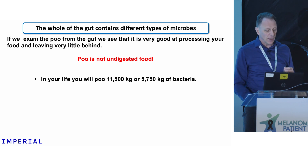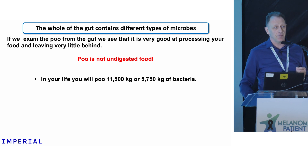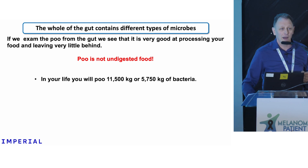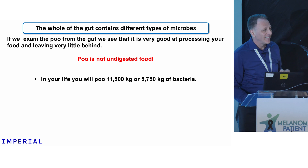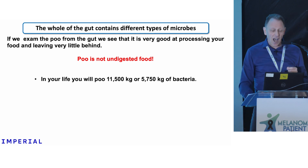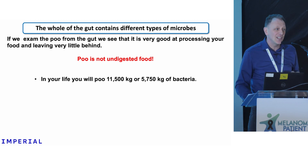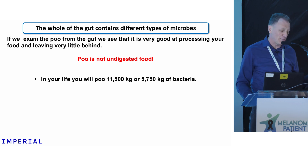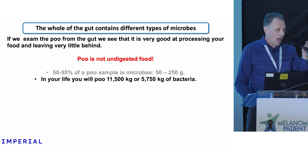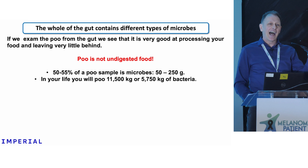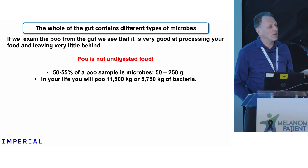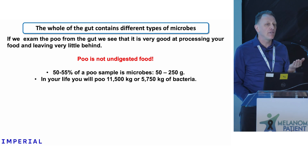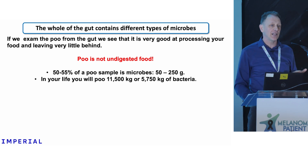You will produce nearly 11 and a half tons of poo in your lifetime — that is a lot of poo. And half of that will be bacterial. So when a poo sample comes out, a lot of people don't look at it, but I do. It's 50% bacterial mass. That is a lot of bacteria, and it's not easy to grow that much bacteria.